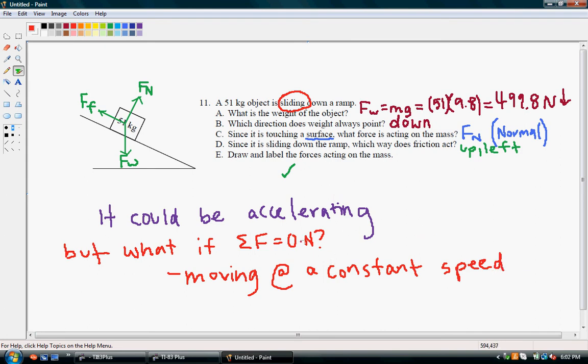So it could be doing two different things. Either it's accelerating down the ramp, or it has a net force of zero—it's in equilibrium, is what we call that—and it could be traveling with a constant speed down the ramp.